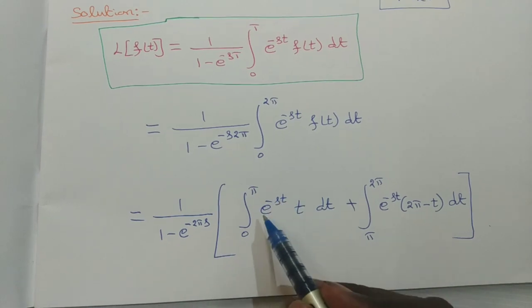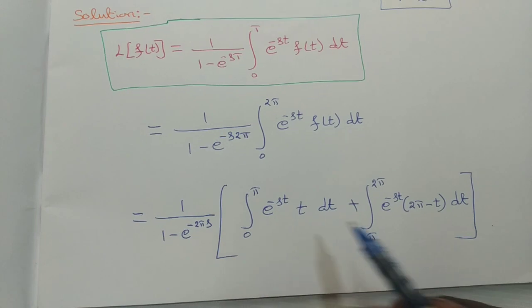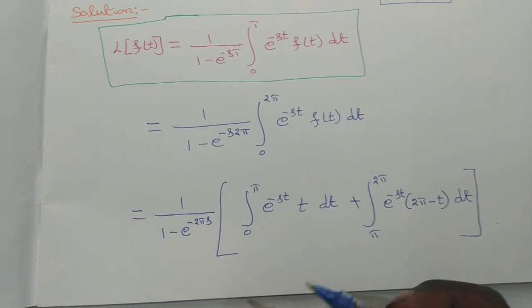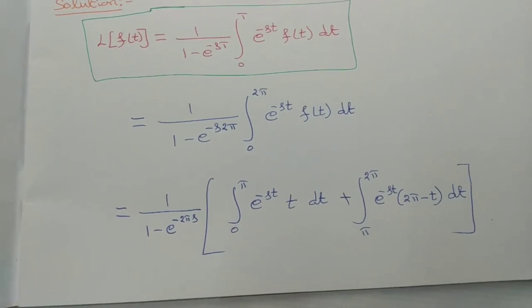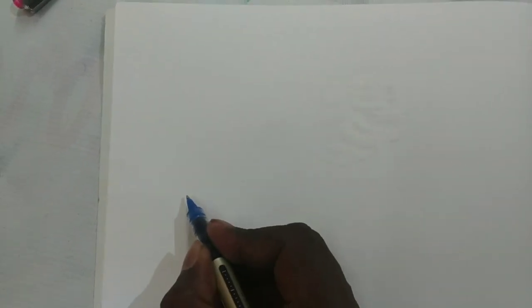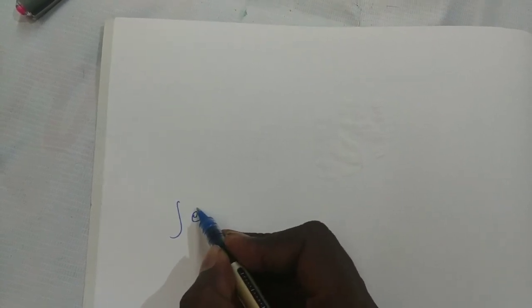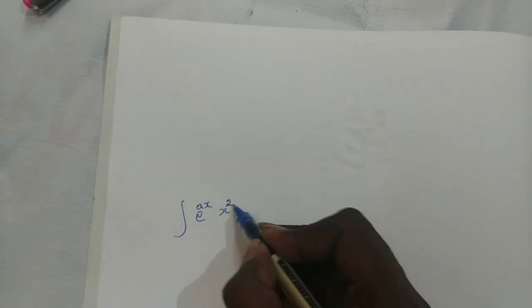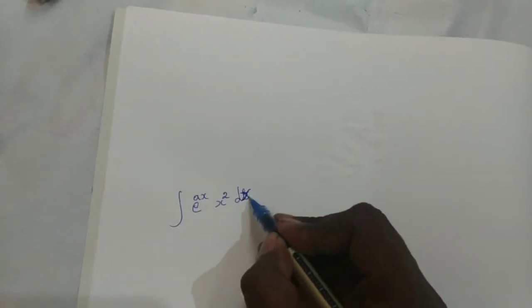To integrate these, each integrand is a product of two functions — one algebraic and one exponential. For both integrals we need to apply Bernoulli's method. The Bernoulli integral formula applies when integrating a product of an algebraic function and an exponential function, such as x² · e^(ax).